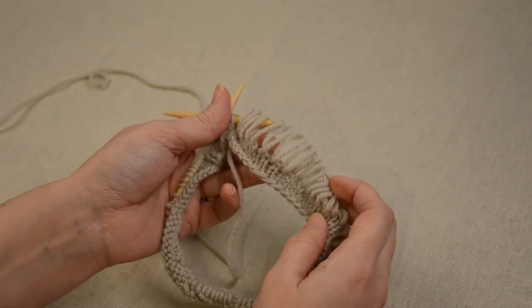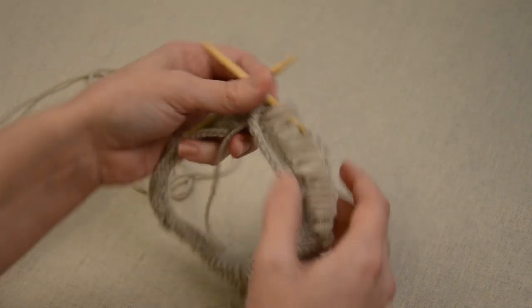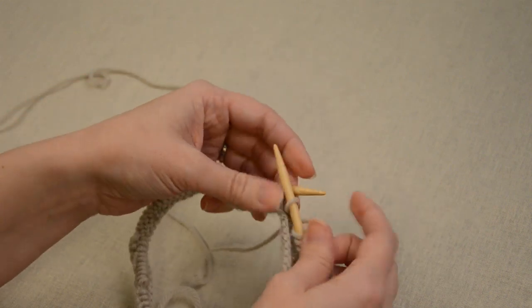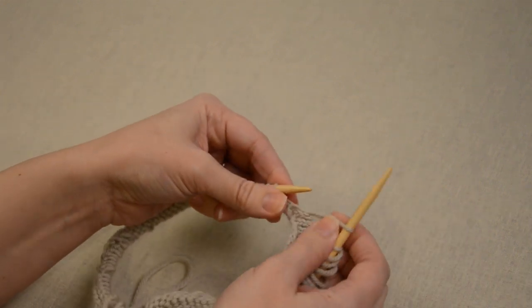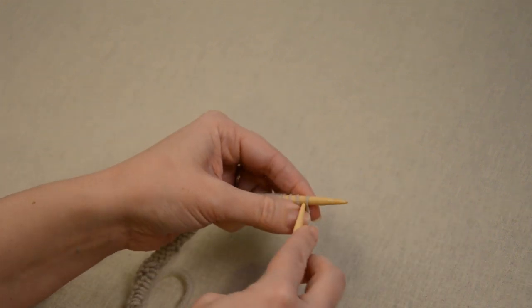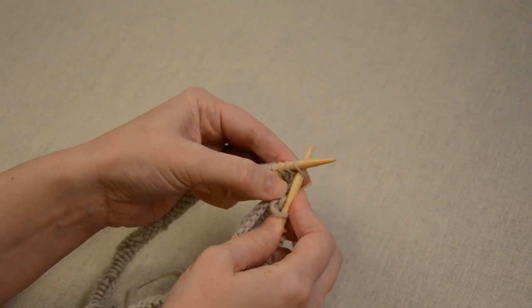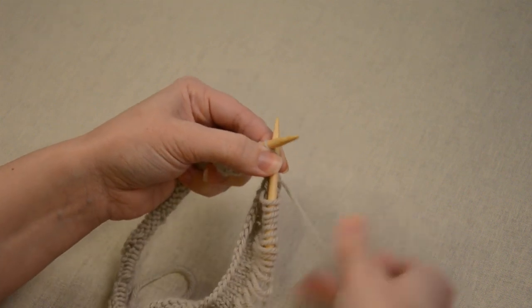So to do this, if you are an English style knitter, what you'll want to do is go into your stitch as if to knit and you're going to yarn over your needle.